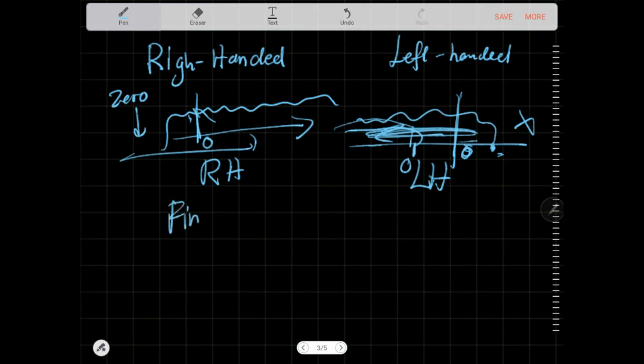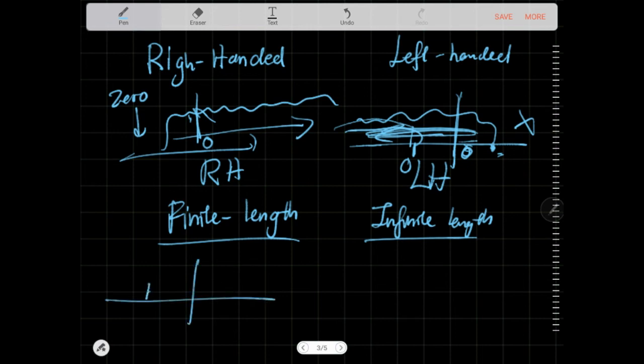And last of all, we have finite length and infinite length. So as the name suggests, it's quite straightforward. Finite length means that it stops at some point and becomes zero. Infinite length, the signal never stops. Never stops. All night, all day, every night. And that's all.